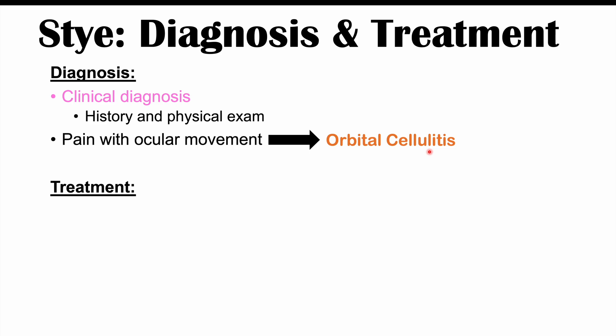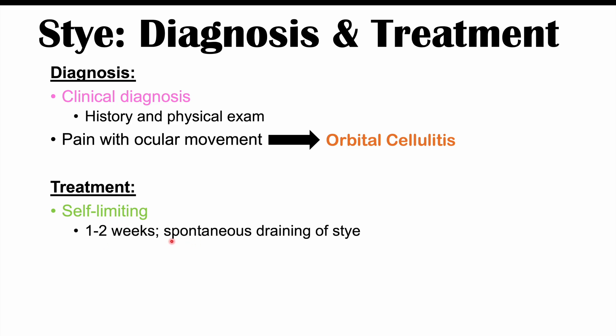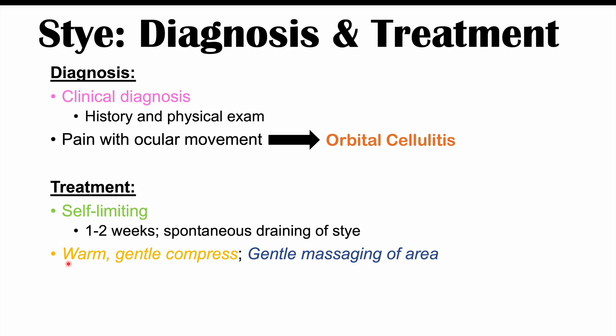A stye is often a self-limiting condition, so treatment is not always necessary — it often resolves on its own in one to two weeks, sometimes with spontaneous drainage. What can help is applying a warm cloth with gentle compression onto the stye, which helps remove debris clogging the gland. Gentle massaging of the area can also help mechanically unblock the glands, and using baby shampoo or mild soap can help remove bacterial debris.